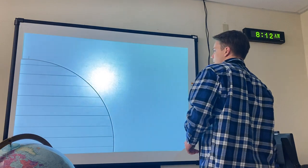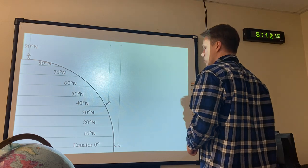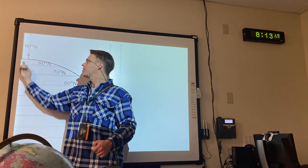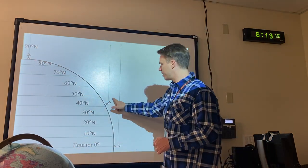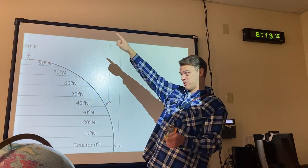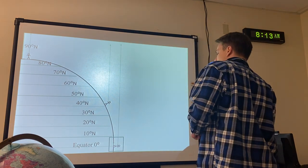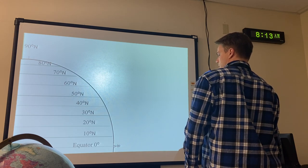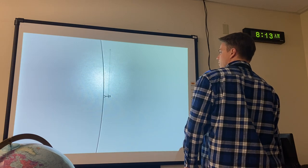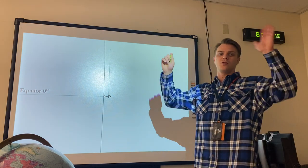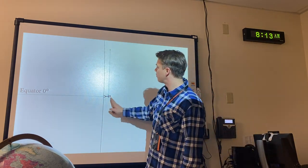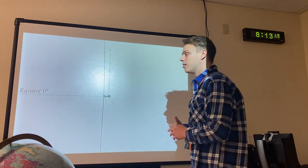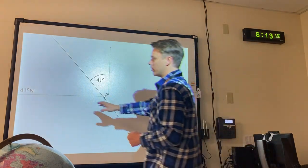Let's imagine all these observers pointing toward the North Star. The person at the equator points flat toward the north horizon. Someone at 31 degrees north looks at an angle in the sky. Zooming in — because the Earth appears flat to us given how big it is — the person at the equator has to look straight out at the horizon to see Polaris. The main idea: whatever your latitude is, that is the angle at which you'll see Polaris.